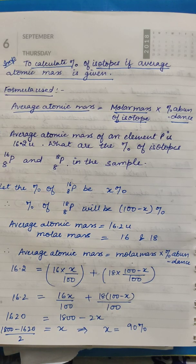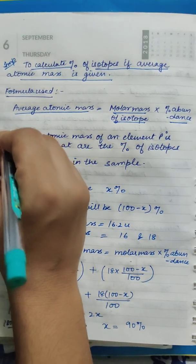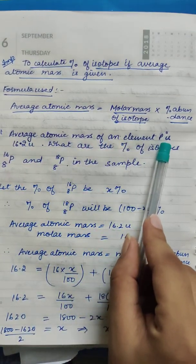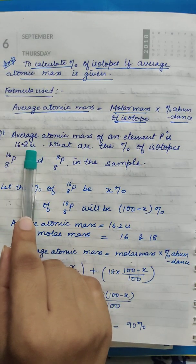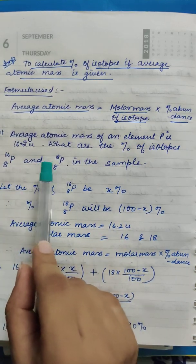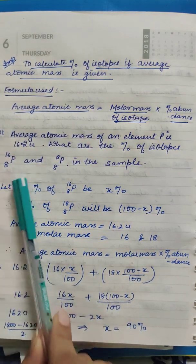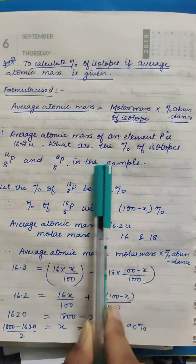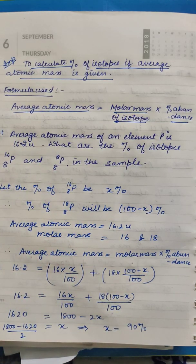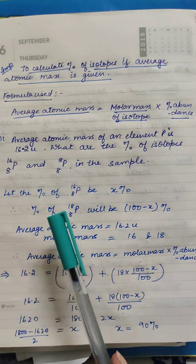Let's see an example. Question: the average atomic mass of element P is 16.2u. What are the percentages of isotopes P-16 and P-18? There are two isotopes given — P-16 and P-18 — in the sample, and you are provided with the average atomic mass. Observe this carefully because these types of questions are frequently asked in exams.